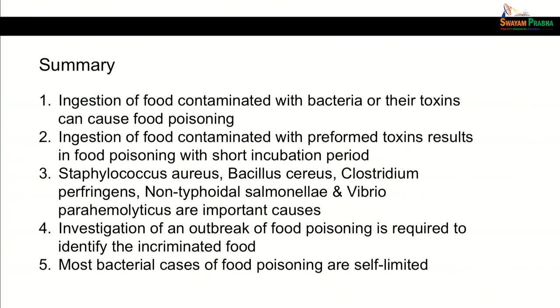To summarize: ingestion of food contaminated with bacteria or their toxins can cause food poisoning. Ingestion of food contaminated with preformed toxin results in food poisoning with a short incubation period. Staphylococcus aureus, Bacillus cereus, Clostridium perfringens, non-typhoidal Salmonellae, and Vibrio parahemolyticus are the important causes. Investigation of an outbreak is required to identify the incriminated food, and most bacterial cases of food poisoning are self-limited; hence antibiotic treatment is usually not required.